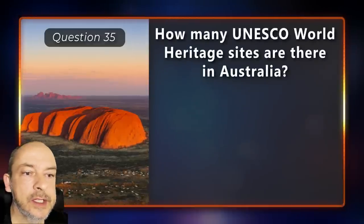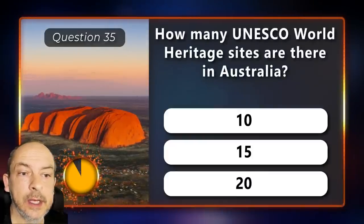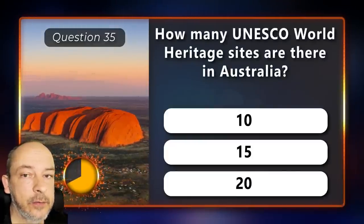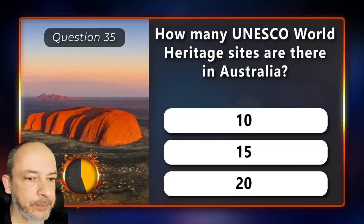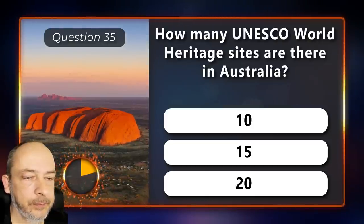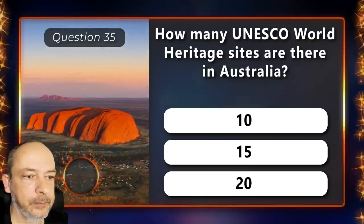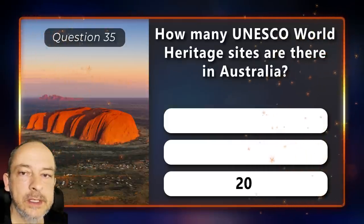How many UNESCO World Heritage sites are there in Australia — 10, 15, or 20? And the answer is 20.